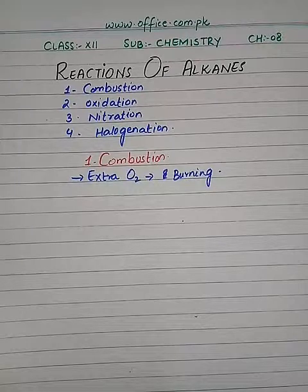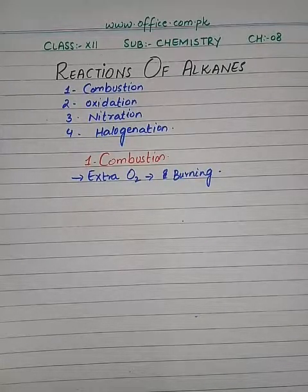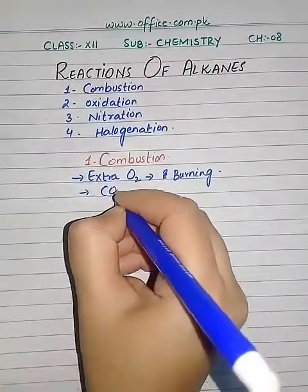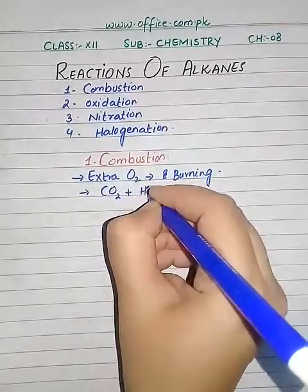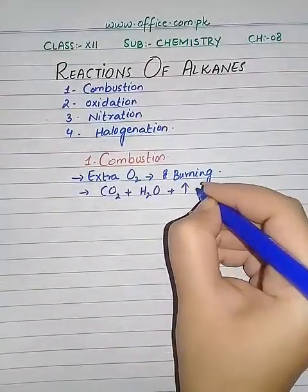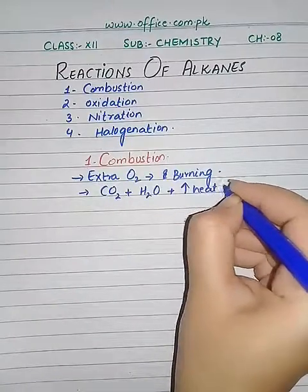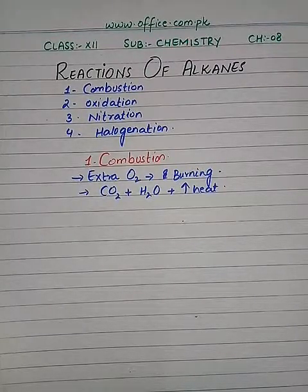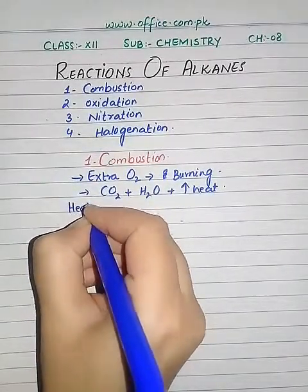In the presence of excessive oxygen, the burning of an alkane is known as complete combustion. When an alkane is completely burned, it yields three products: carbon dioxide, water, and a high amount of heat energy. The reaction is highly exothermic. The amount of heat evolved when one mole of hydrocarbon is burnt to carbon dioxide and water is called the heat of combustion.